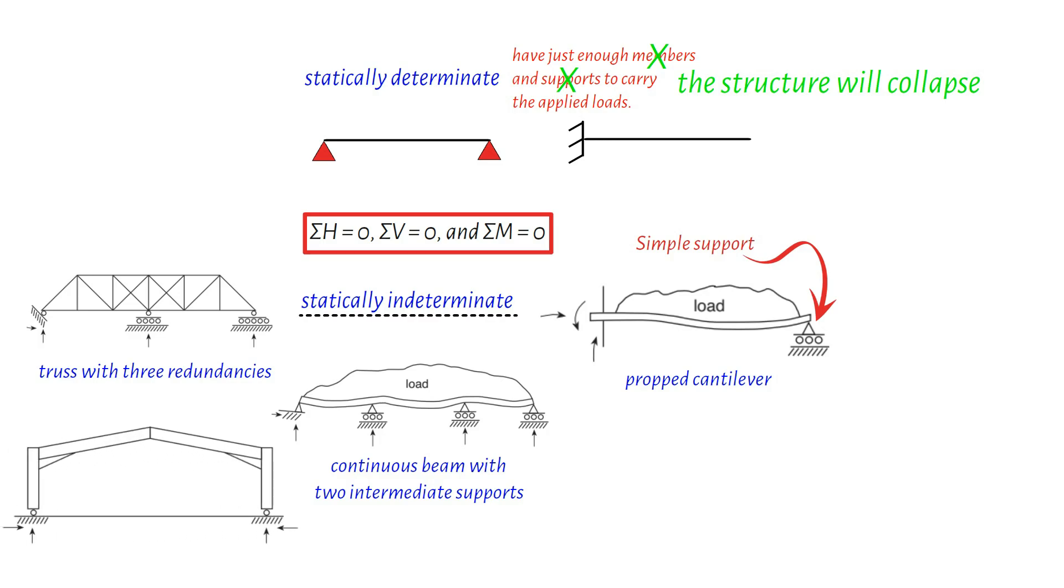We also encounter the two-pinned portal structure, often found in factories, warehouses, and supermarkets. Compared to the three-pinned determinate version, this structure requires less steel, making it more economical.